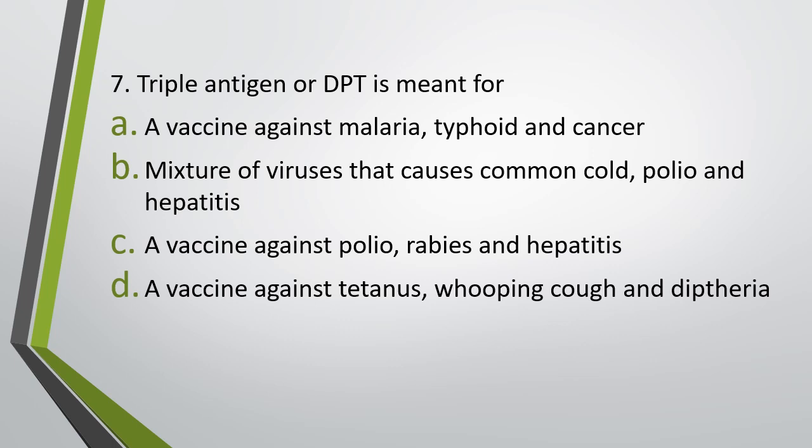Question number seven: Triple antigen or DPT is — (a) a vaccine against malaria, typhoid, and cancer, (b) a mixture of viruses that causes common cold, polio, and hepatitis, (c) a vaccine against polio, rabies, and hepatitis, (d) a vaccine against tetanus, whooping cough, and diphtheria. Correct answer is option D. DPT stands for diphtheria, pertussis, and tetanus — pertussis is also known as whooping cough.